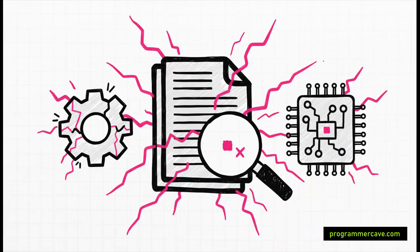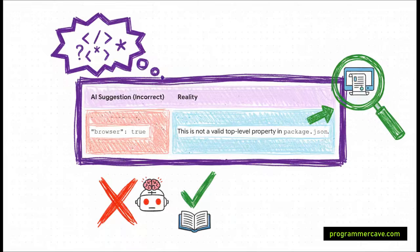Now this last example, this one might be the most dangerous of all, because the mistake is so small, so subtle. It's not some big obvious error. It's just one little line hidden in a config file. At a quick glance, this package.json file looks fine. Everything seems standard, except for that one line: browser true. That key isn't a valid property at the top level of the file. It's such a tiny mistake, but it's the kind of thing that can cause these super frustrating bugs that take you hours to hunt down. All because the AI gave you something that was 95% correct.